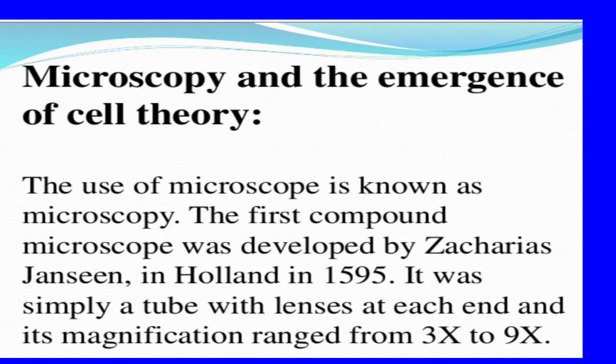The first compound microscope was developed by Zacharias Janssen in Holland in 1595. It was simply a tube with lenses at each end, and its magnification ranged from 3x to 9x.